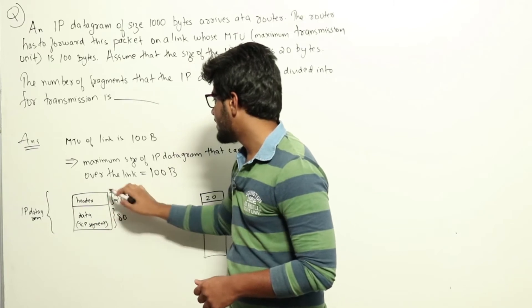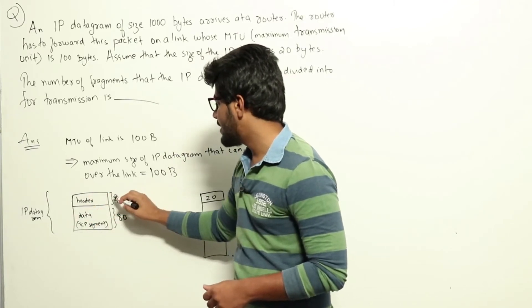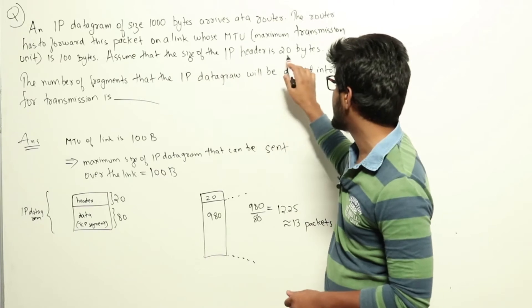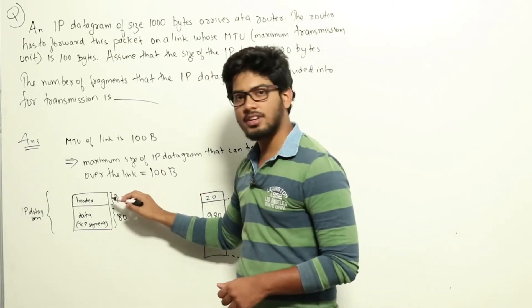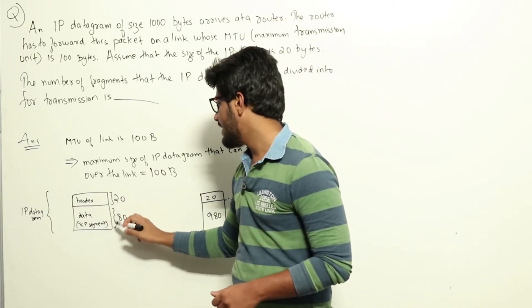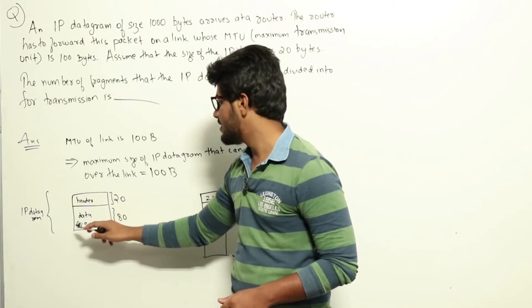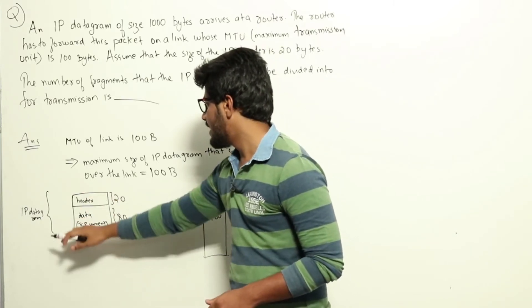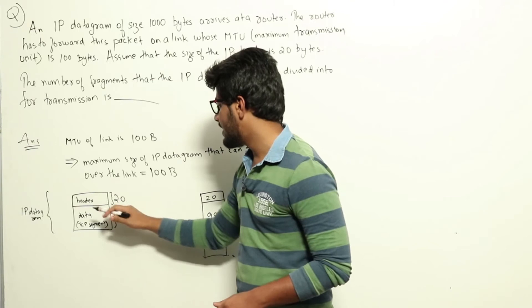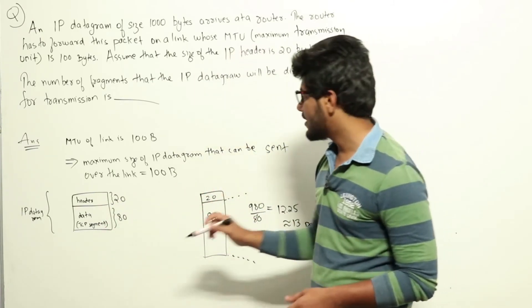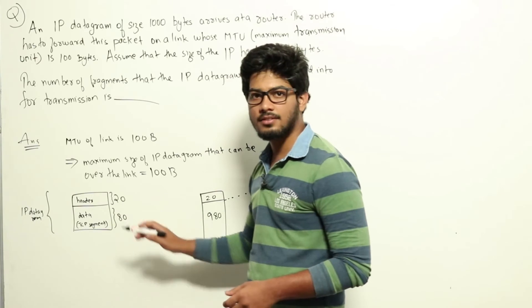An IP datagram of size 100 bytes will have an IP header of 20 bytes. That was given in the question, assuming the size of the IP header is 20 bytes. So if the header is 20 bytes, the data part will be 80 bytes. The data part is nothing but the TCP segment. An IP datagram will have a header of 20 bytes and data of 80 bytes. Meaning, in an IP packet, we can at most send data of 80 bytes only.